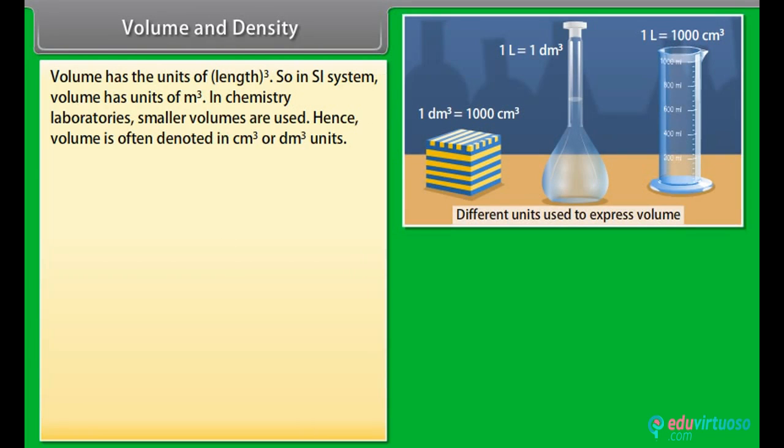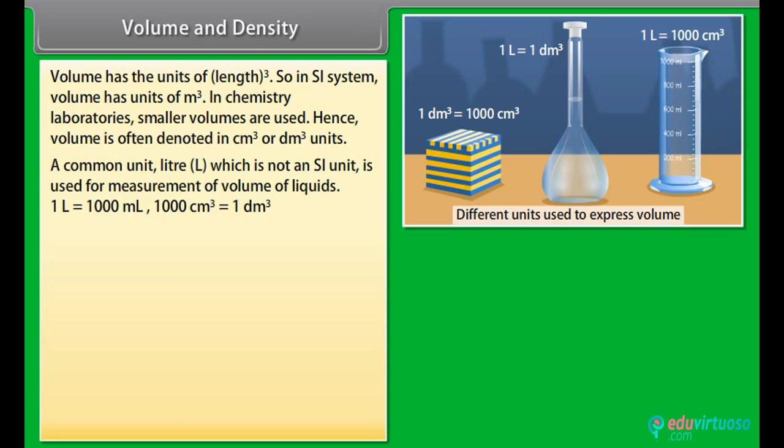Volume has the units of length raised to the power 3. So, in SI system, volume has units of meter cube. In chemistry laboratories, smaller volumes are used. Hence, volume is often denoted in centimeter cube or decimeter cube units. A common unit, liter (L), which is not an SI unit, is used for measurement of volume of liquids. One liter is equal to one thousand milliliter. One thousand centimeter cube is equal to one decimeter cube.